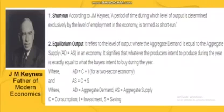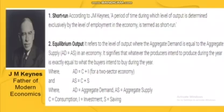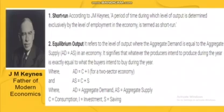J.M. Keynes is the father of modern economics. He has a short-run theory of employment and income. According to J.M. Keynes, a period of time during which the level of output is determined exclusively by the level of employment in the economy is termed as the short-run. In short, short-run means that the level of employment determines whether output increases or decreases.